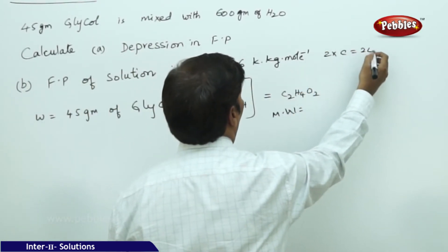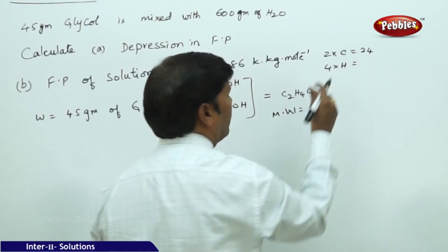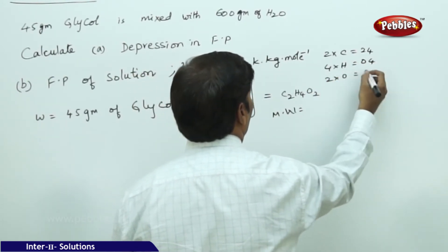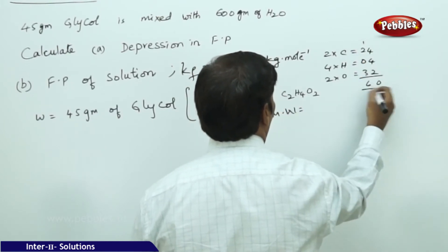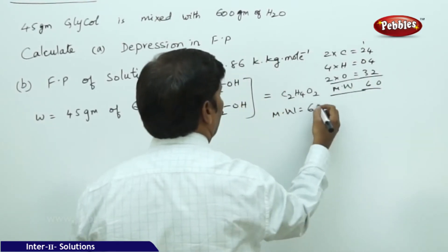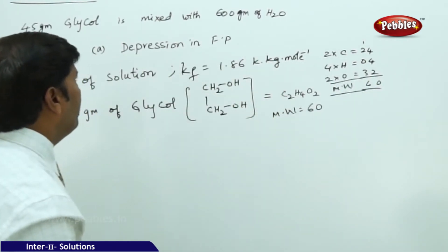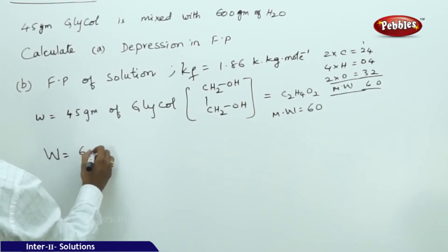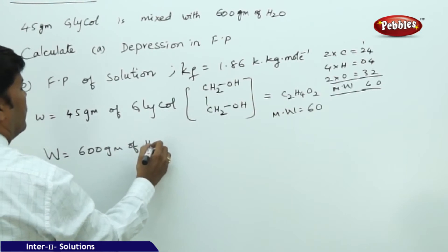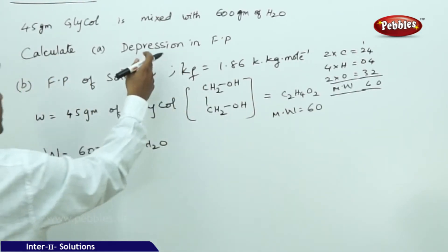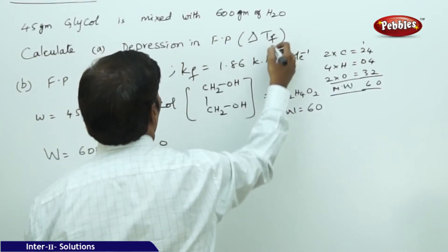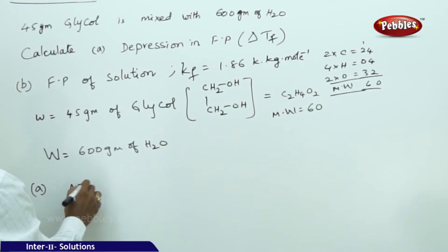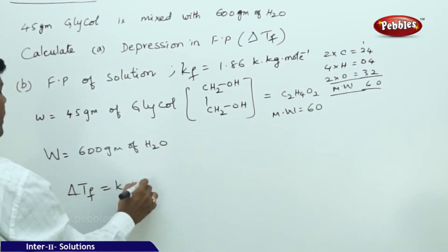The molecular weight of glycol: 2 × 12 (carbon) = 24, plus 4 × 1 (hydrogen) = 4, plus 2 × 16 (oxygen) = 32. Total molecular weight = 60 grams per mole. The weight of solvent (water) W = 600 grams. To find the depression in freezing point, apply ΔTf = Kf × molality.